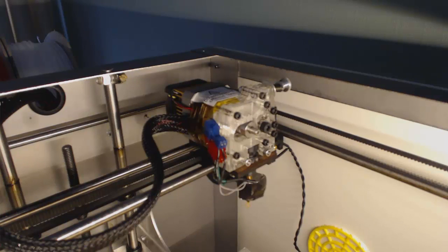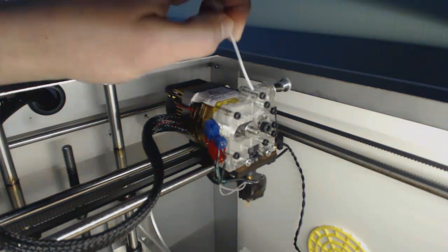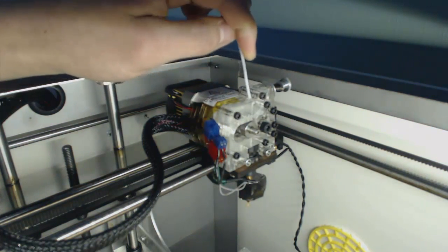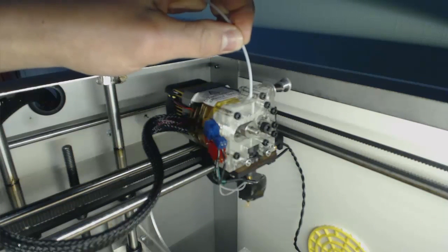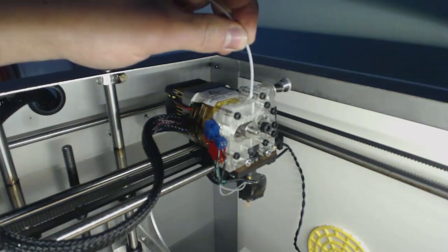And once you've done that, grab your other roll of filament. You'll notice there's a small hole in the top of the extruder head. And you just put it straight in.